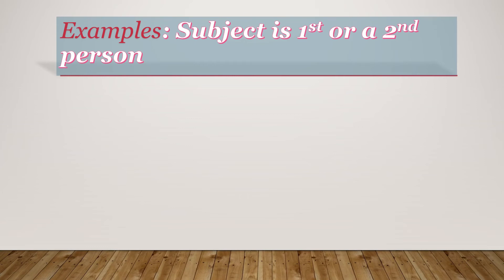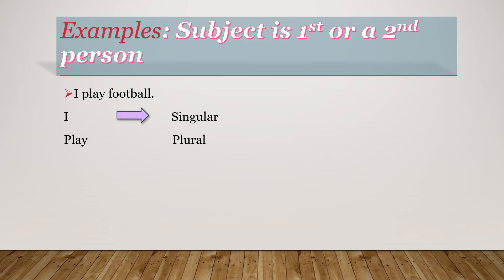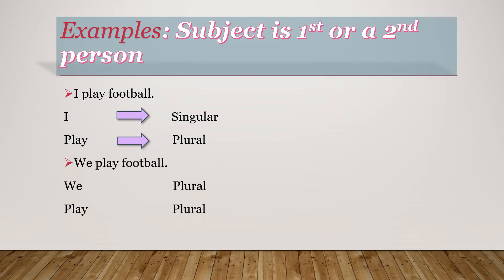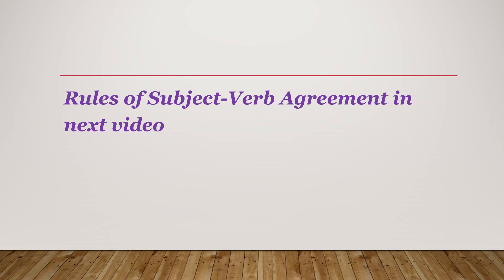Now, let us see some examples where the subject is first or second person and not third person. First example: I play football — here, I is first person, that is singular, and play is the plural verb. Second example: We play football — here, we is a plural subject and play is a plural verb. This is not following the rule of singular subject with singular verb, since the rule always applies when the subject is third person. For first or second person, the rule doesn't follow. There are some rules of subject-verb agreement that I will discuss in my next video.